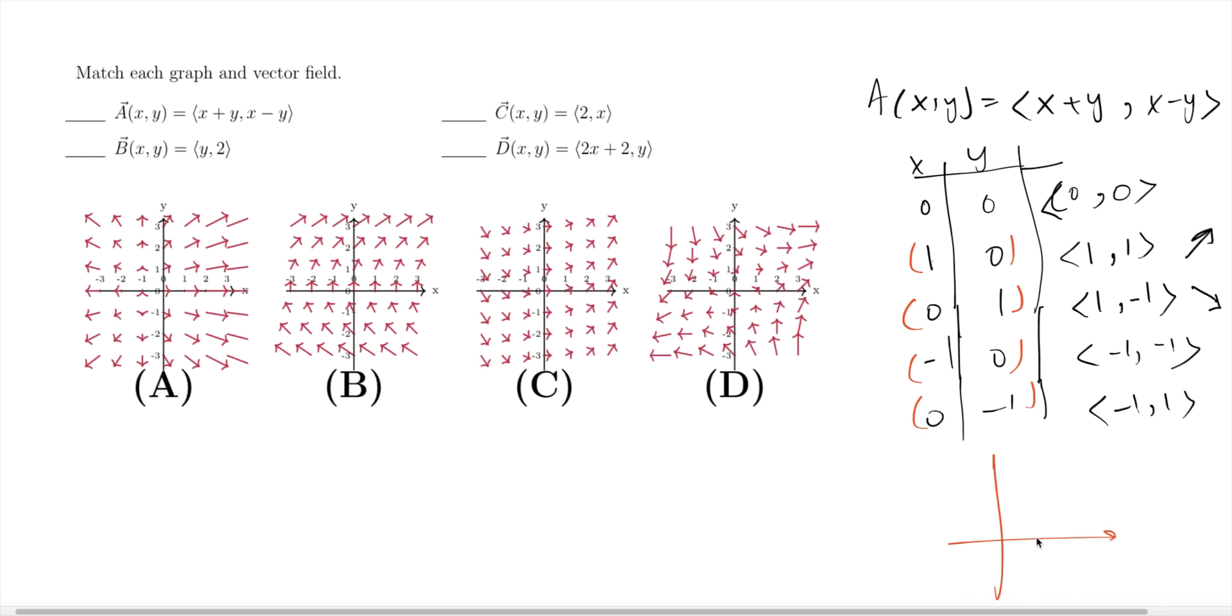At (-1,0), negative one for x and negative one for y starting from zero looks like that. At (0,-1) it should be negative one, zero and negative one right there.